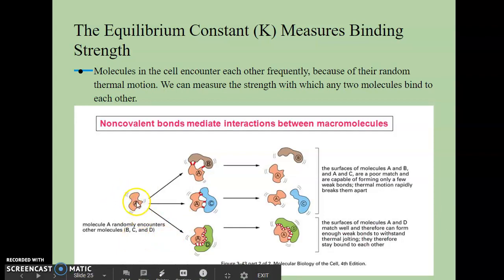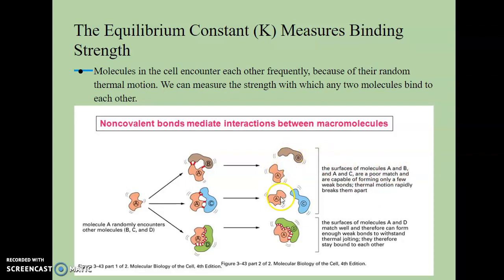We have molecule A that will randomly encounter all of these other molecules: B, molecule C, and molecule D. And so what it's telling you is that we have one molecule that can theoretically bind with all these other molecules. And so the surfaces of molecules A and B as well as the surfaces of molecules A and C are a poor match and are capable of forming only a few weak bonds. And so then their thermal motion will rapidly break them apart.